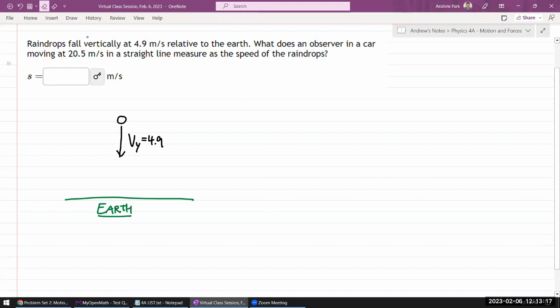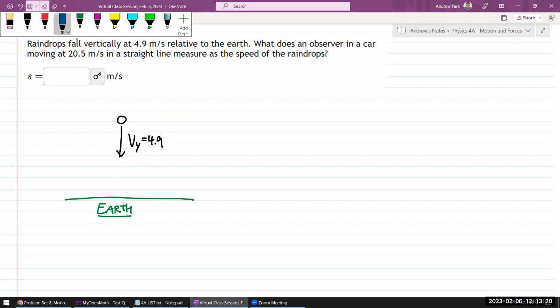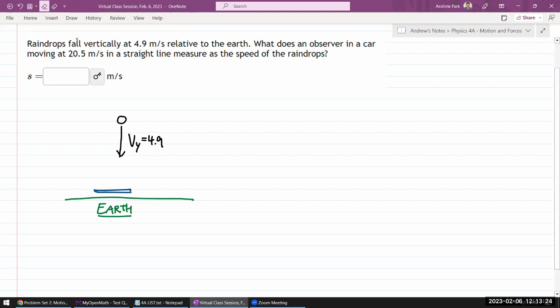So it says there is an observer in a car. Just describe this as a car or a cart. There's an observer here who is moving at some speed in a straight line. Okay. And it says a straight line. It didn't quite say horizontal.